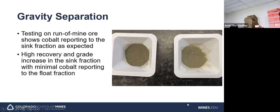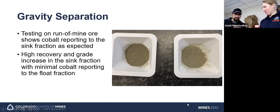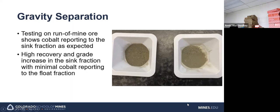And since most of the cobalt reported to the sink fraction with high amounts of the gang material being removed, we had a very high recovery and grade. So this image here is some dried sink and float fractions. On the left is the sink. And on the right is the float. It's kind of hard to see in this image, but the float fraction is noticeably lighter in the lab, and you can actually see the pyrite particles in the heavy fraction, which I think is very interesting.